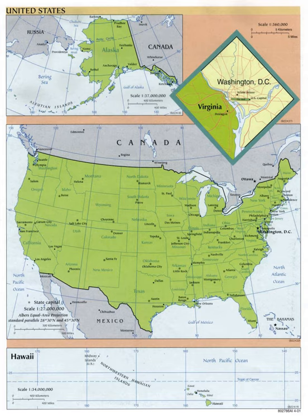The two former unincorporated U.S. territories are the Panama Canal Zone and the Philippine Islands. Additionally, the United States administered the Trust Territory of the Pacific Islands from July 18, 1947 until October 1, 1994. The Trust Territory was subsequently divided into four political entities. One, the Northern Mariana Islands, became an unincorporated U.S. territory, while three—Federated States of Micronesia, Marshall Islands, and Palau—became independent nations. All three have become freely associated with the United States under a Compact of Free Association.